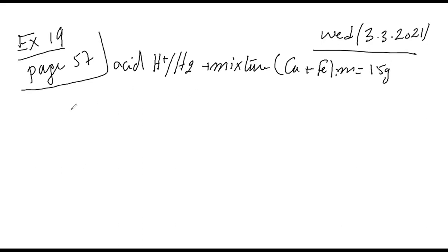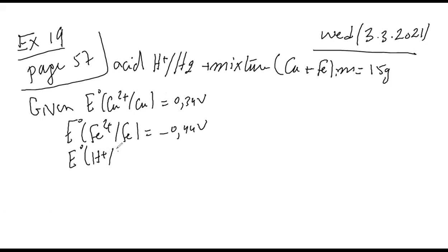Write the balance equation of the occurring reaction. Given: E°(Cu2+/Cu) = 0.34 volt, E°(Fe2+/Fe) = -0.44 volt, E°(H+/H2) = 0. We need to underline the introduced chemical species.